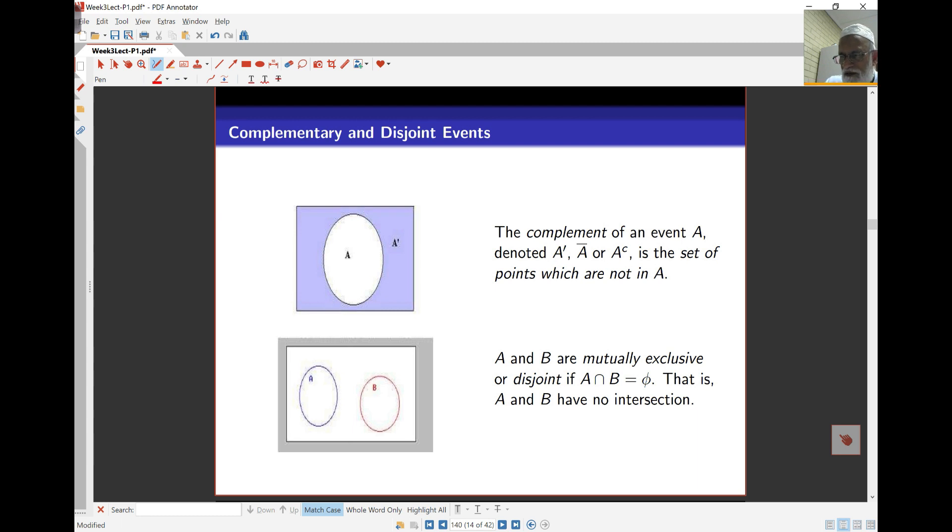Mutually exclusive means there is nothing in common between those. A and B are mutually exclusive if they have no intersection—the intersection is the empty set. There are various notations for complement: sometimes a dash, sometimes a line on top, or sometimes 'c'. You'll probably see the last one or second one most, but be aware all these are possible notations.